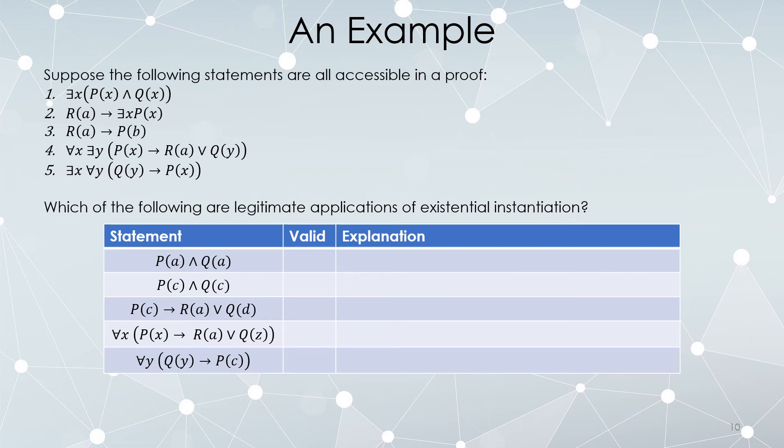Which of the following are going to be legitimate uses of existential instantiation? Here's our list. From any of the things above, can you get P(a) and Q(a)?